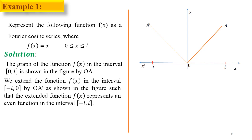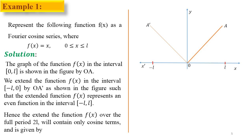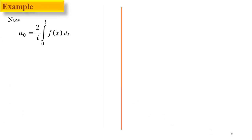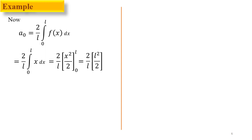We know the even function is symmetric about the y-axis, which is what we have done here. The extended function f(x) lies between −L and +L and is an even function. Thus, f(x) over the full period 2L will contain only cosine terms: f(x) = a₀/2 + Σ aₙ cos(nπx/L). Now we find a₀: a₀ = (2/L)∫₀ᴸ f(x)dx = (2/L)∫₀ᴸ x dx = (2/L)[x²/2]₀ᴸ = L.